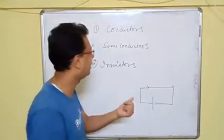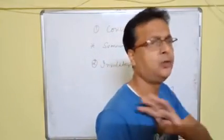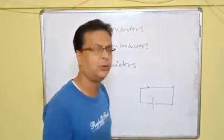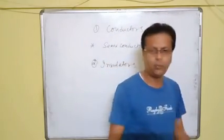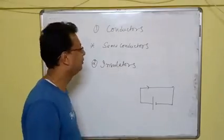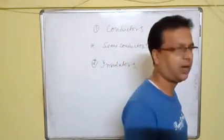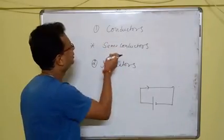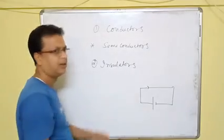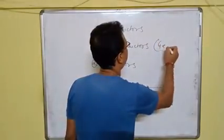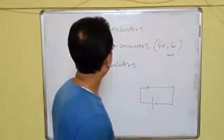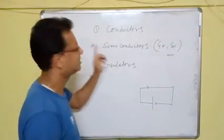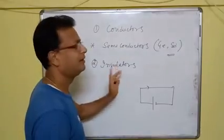In insulators, free electrons are not easily dislodged — you must apply a very high electric field for electrons to move. Wood and plastic are examples of insulators. Conductors include gold, silver, and copper, and one interesting thing is that the human body is also a very good conductor. In between conductors and insulators is another class of materials called semiconductors, such as germanium and silicon. Semiconductors have conductivity in between that of a conductor and an insulator.